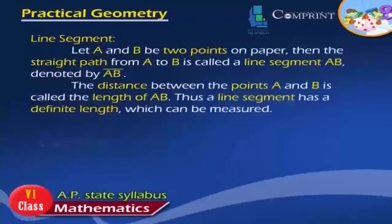Line Segment: Let A and B be two points on paper, then the straight path from A to B is called a line segment AB, denoted by AB bar. The distance between the points A and B is called the length of AB. Thus, a line segment has a definite length, which can be measured.